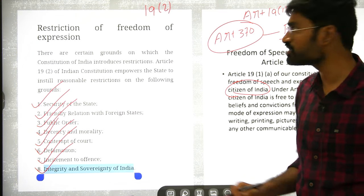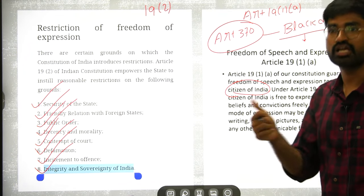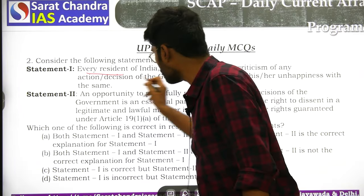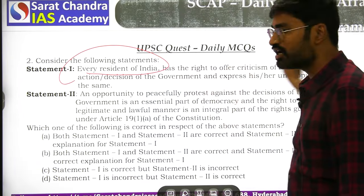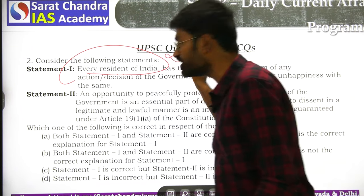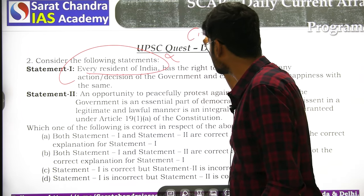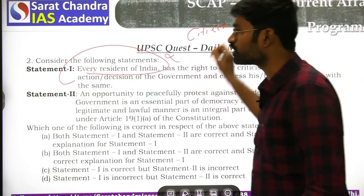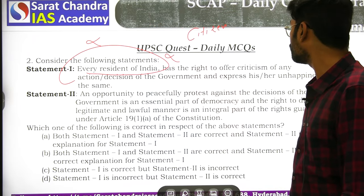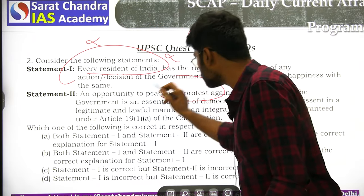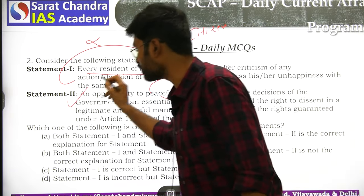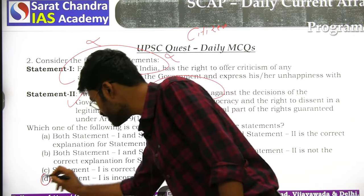So under Article 19(2), restrictions on freedom of speech can apply in those situations. Looking at the statements: the right to criticize the government applies to citizens only, not every resident of India. The statement that 'every resident of India' has this right is incorrect. An opportunity to peacefully protest is part of Article 19(1)(a) per the Supreme Court — that is a correct statement. So Statement 1 is incorrect and Statement 2 is correct.